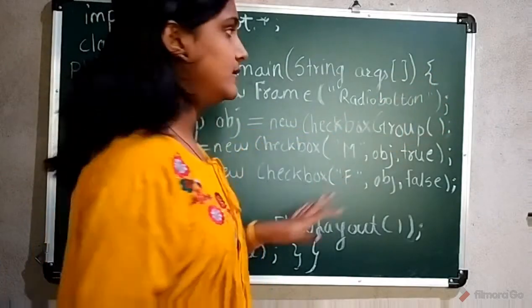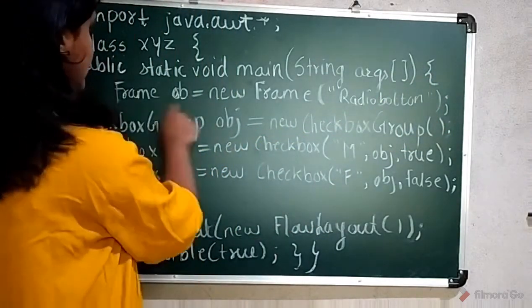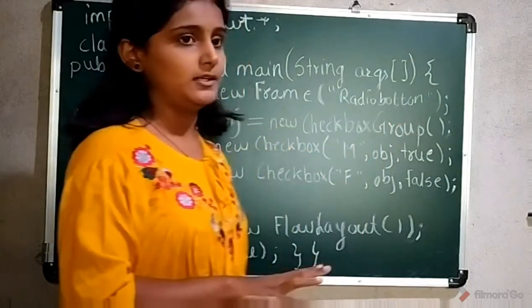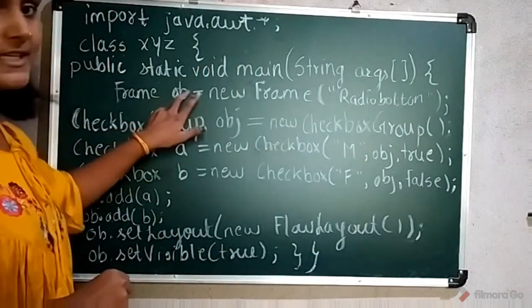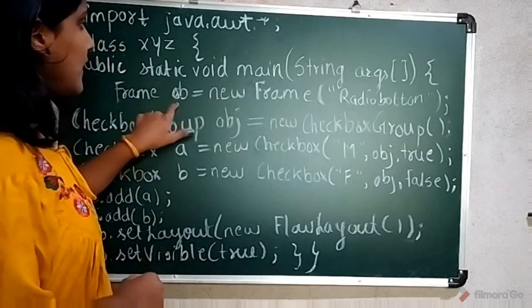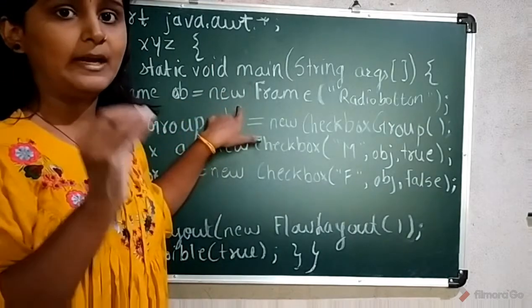Now here I have created the frame and passed the title "Radio button". The object of my frame is ob. Using the new keyword I made the object of frame.